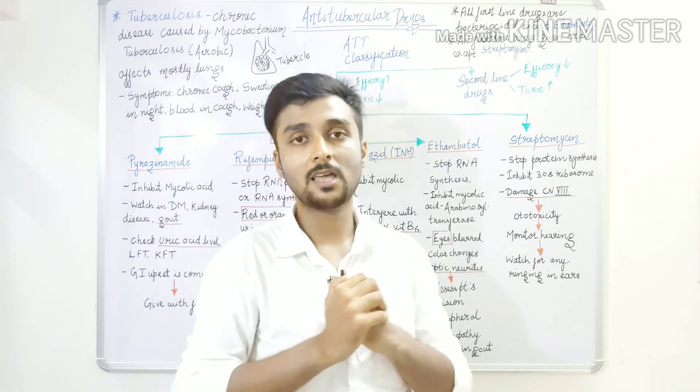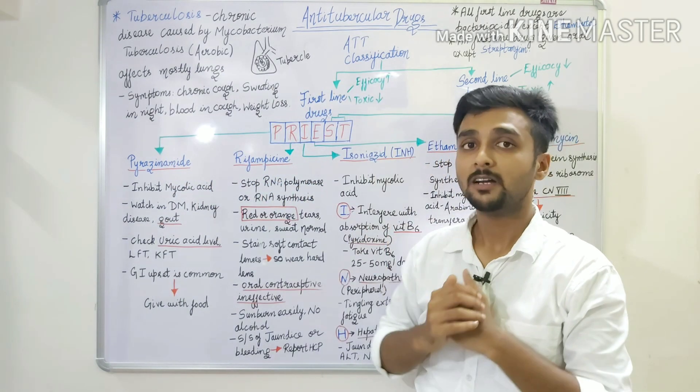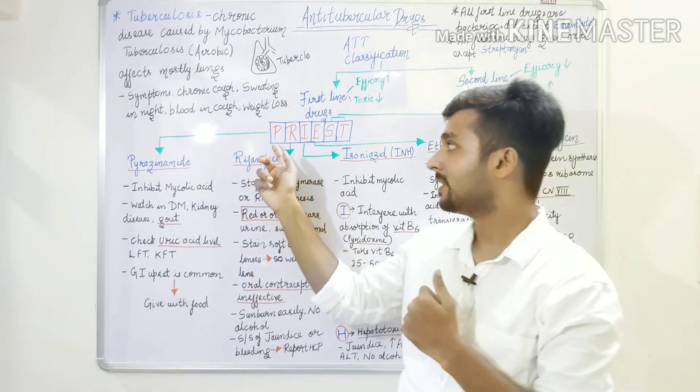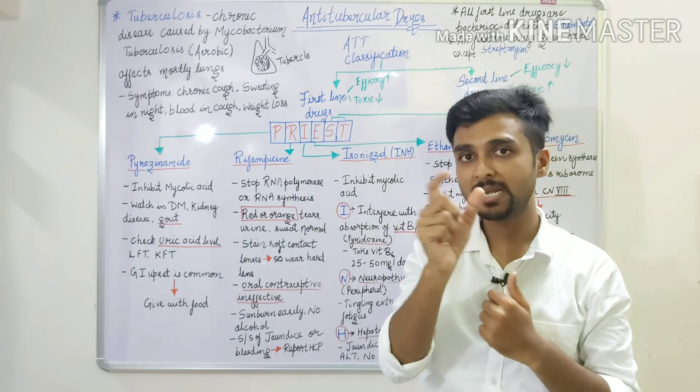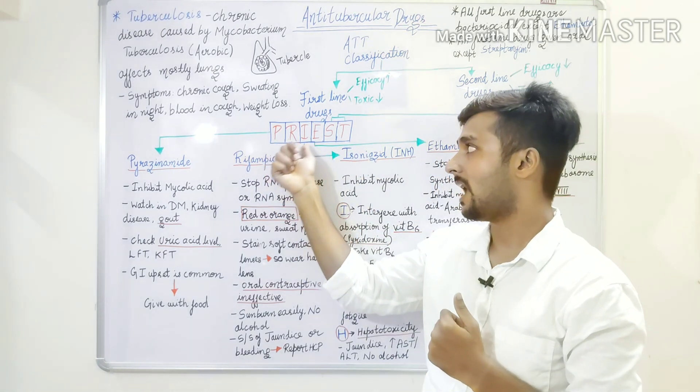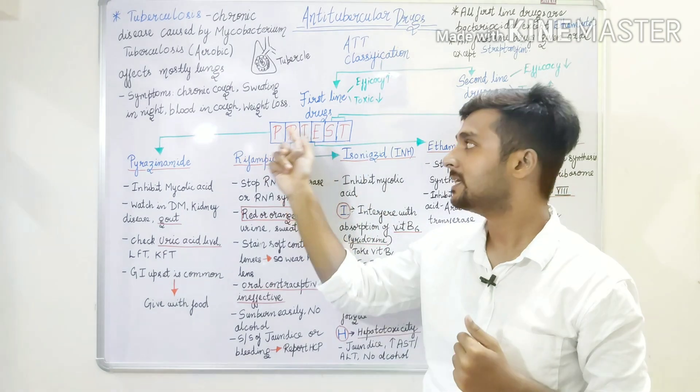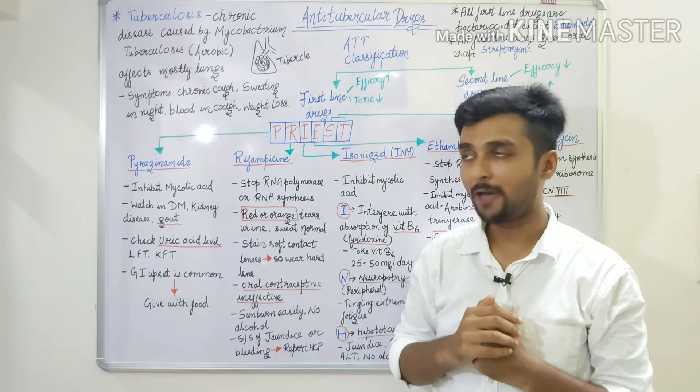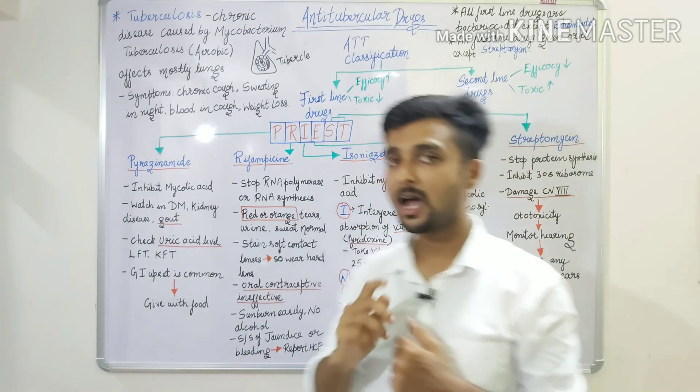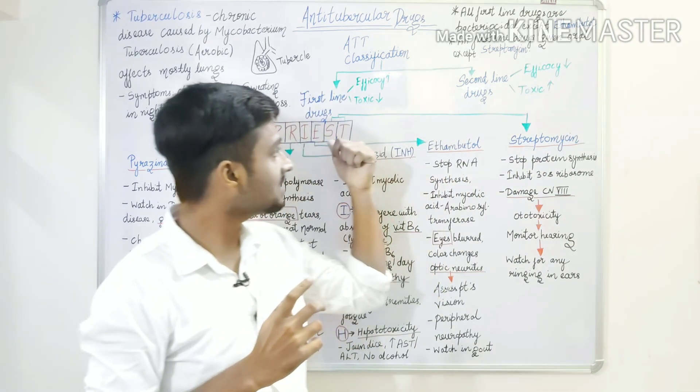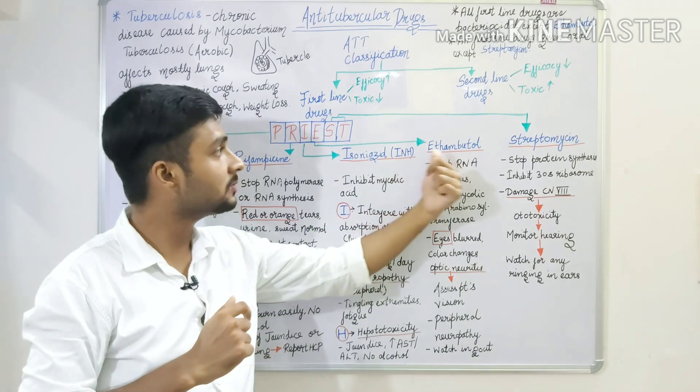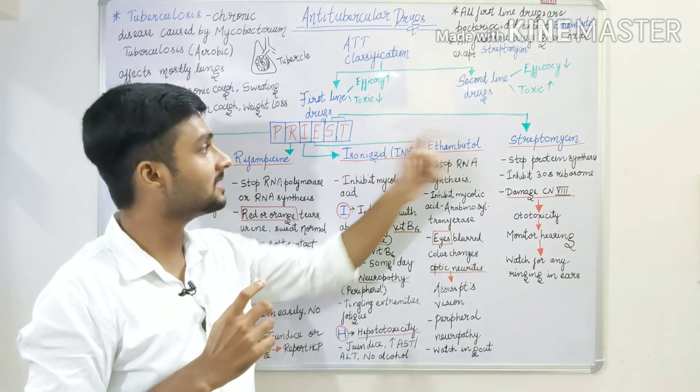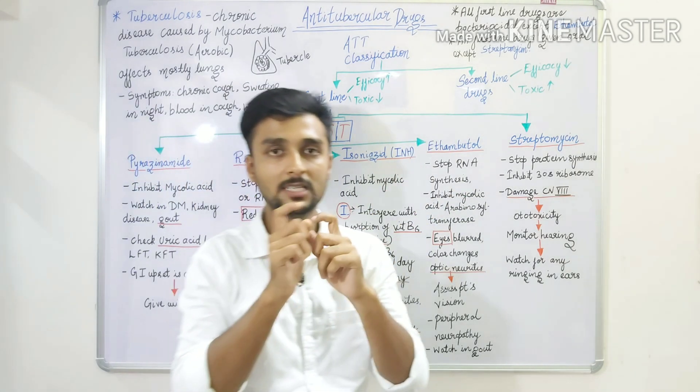So, let's go ahead and remember our first-line drugs. We have a quick trick here: PRIEST. P stands for Pyrazinamide, R stands for Rifampicin, I stands for Isoniazid, E stands for Ethambutol, and ST stands for Streptomycin. PRIEST.